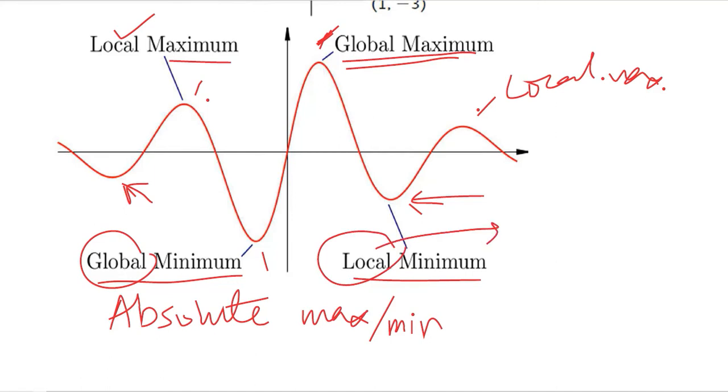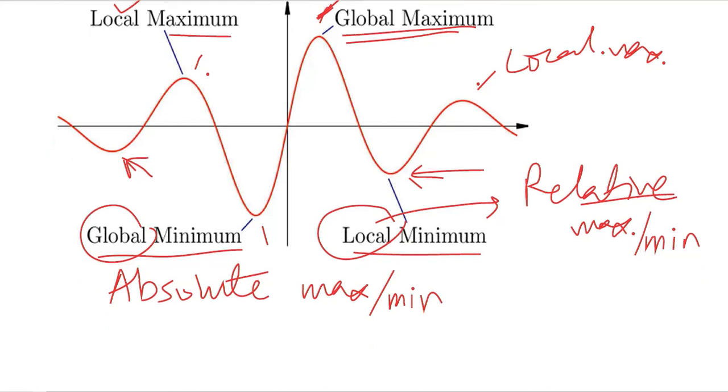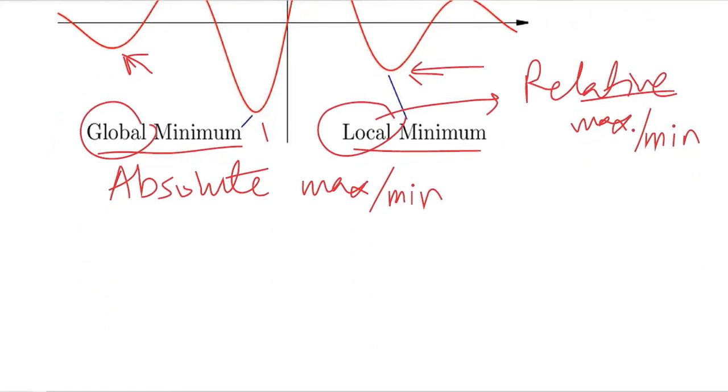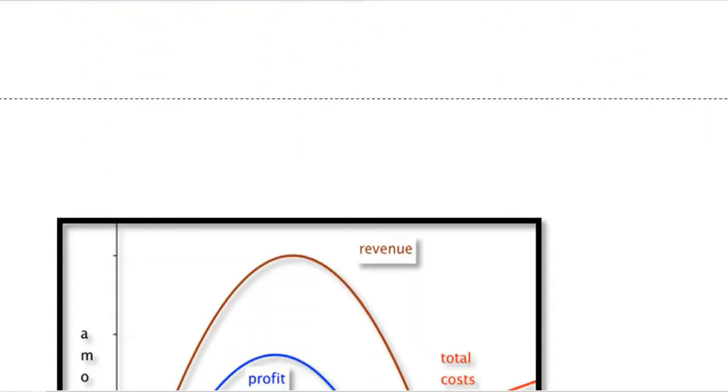Moreover, the local is also termed as relative maximum and minimum. So this is also a possibility, and we are assuming that there is the possibility of having more than one maximum and more than one minimum. And the distinction between them is via local and global, and relative versus absolute. So after understanding these specific terms, let us try to visualize the optimization for some economic variables.